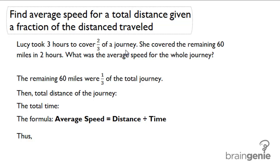Find average speed for a total distance given a fraction of the distance traveled. Lucy took three hours to cover two-thirds of a journey. She covered the remaining 60 miles in two hours. What was the average speed for the whole journey?